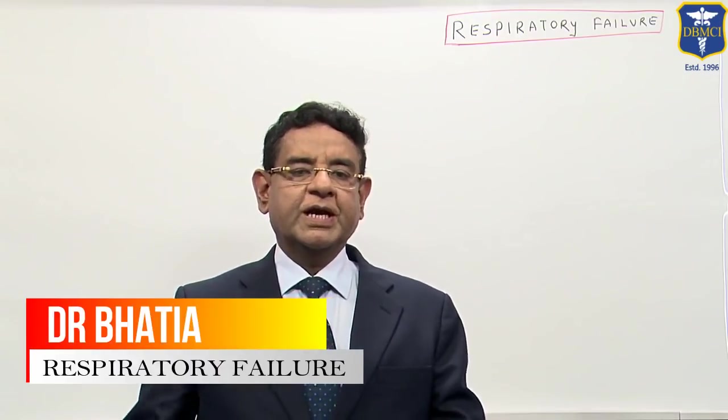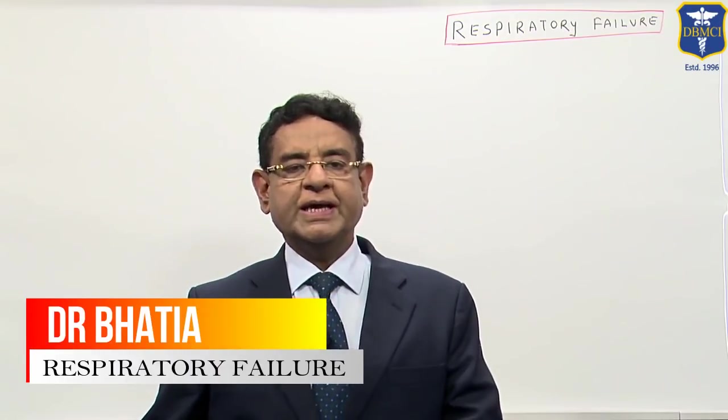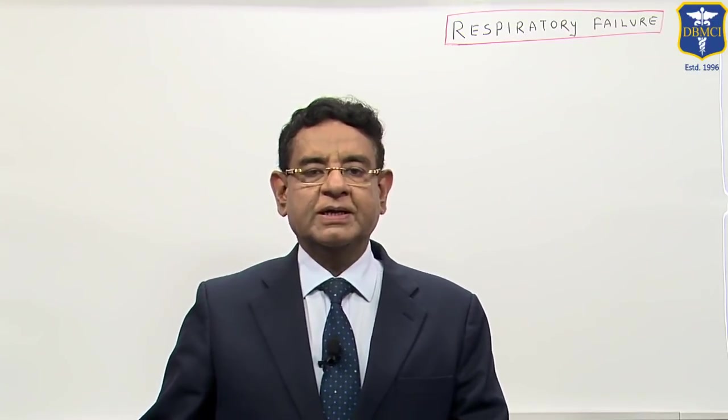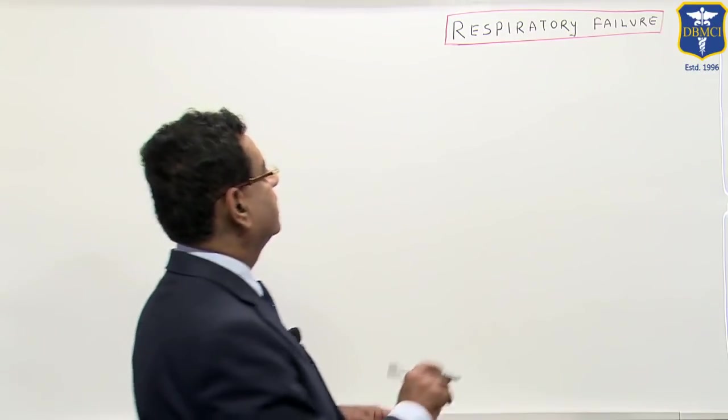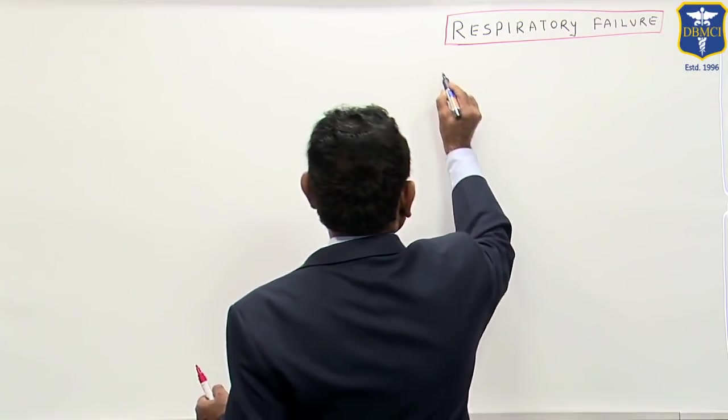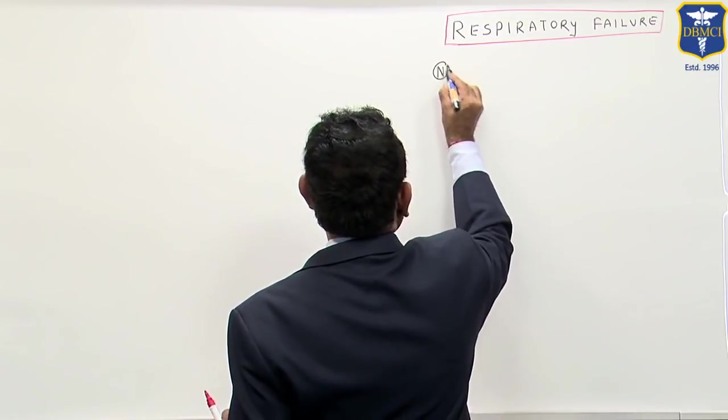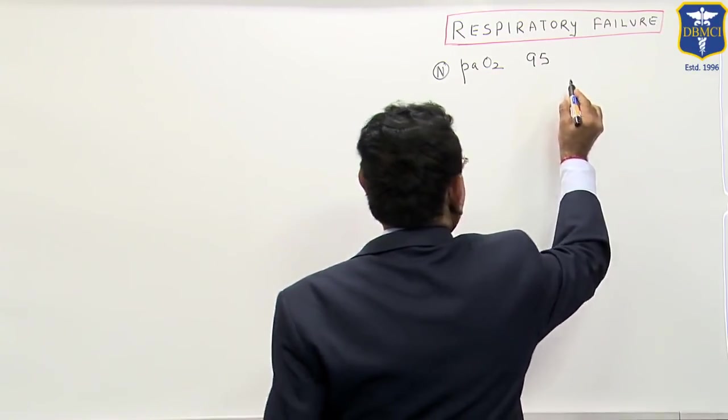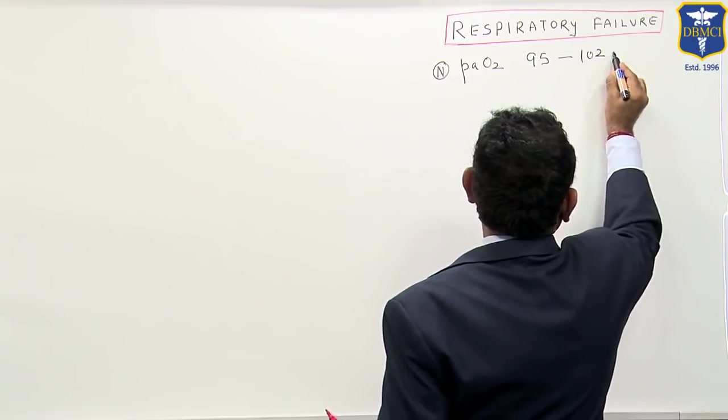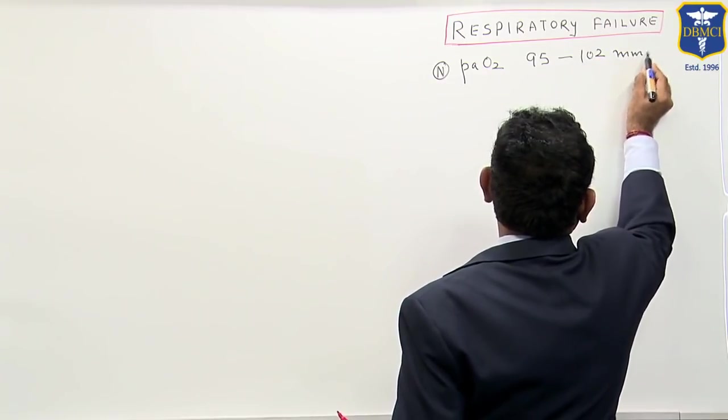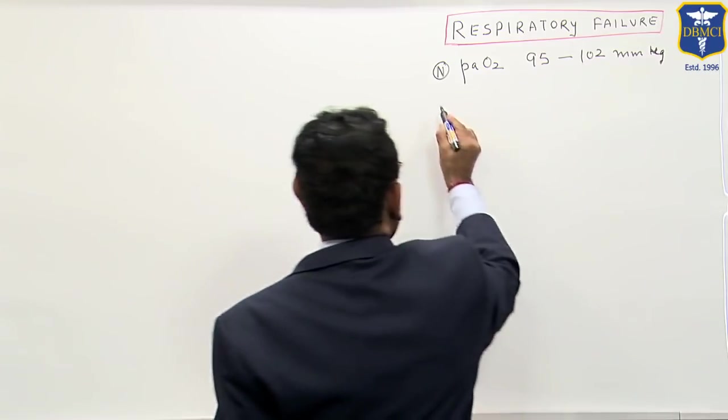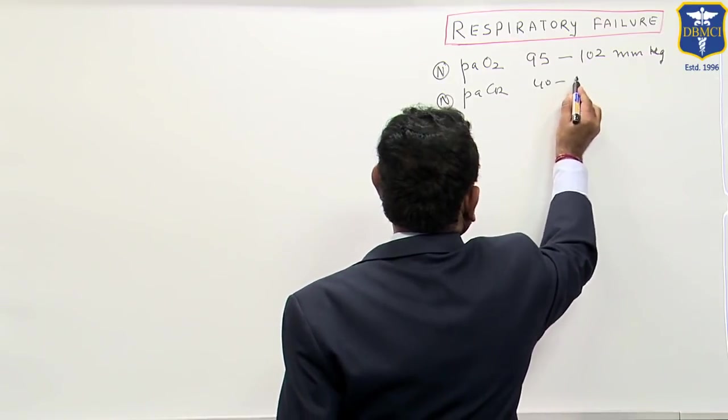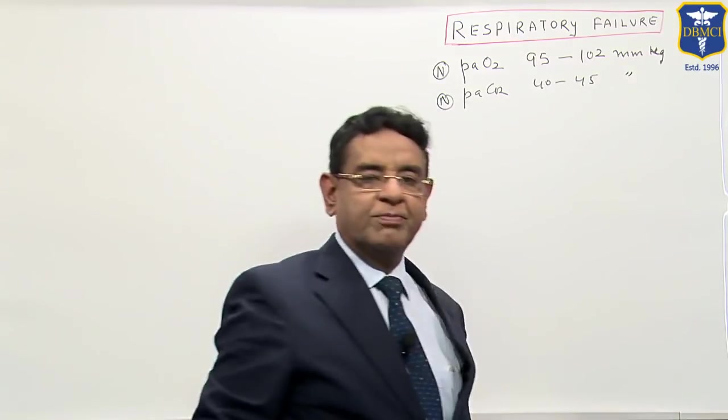Hello friends, now I will be talking to you about respiratory failure, but before I discuss this topic, let me discuss some basic concepts. Normal PaO2 is between 95 to 102 mm of mercury and normal PaCO2 is 40 to 45 mm of mercury.